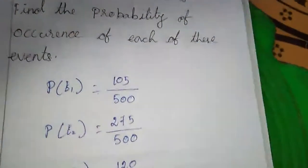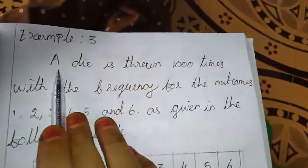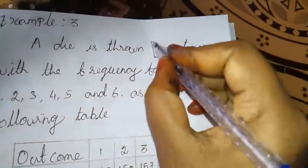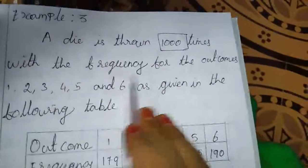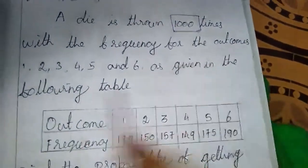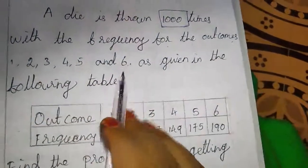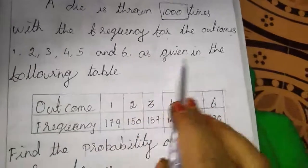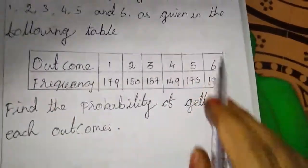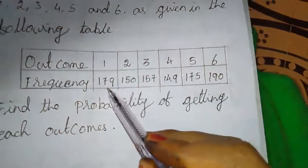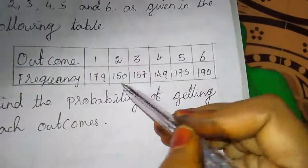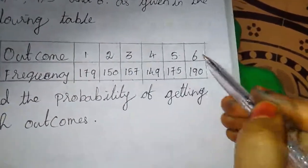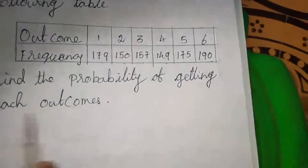Now we will move to Example 3. A die is thrown 1000 times, so 1000 will come in the denominator for every event. The frequency for the following outcomes is given in a table: outcome 1 appeared 179 times, 2 appeared 153 times, 3 appeared 157 times, 4 appeared 149 times, 5 appeared 175 times, 6 appeared 190 times. Find the probability of getting each outcome.